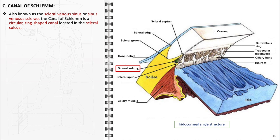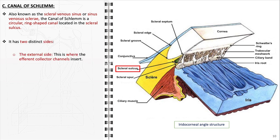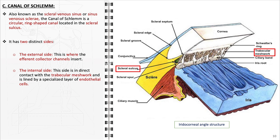The canal of Schlem's positioning is strategic for its function in ocular fluid dynamics. The canal has two distinct sides: on the external side, efferent collector channels insert into the canal, transporting aqueous humor from the canal of Schlem into the systemic venous circulation, which is essential in maintaining the balance of intraocular pressure. On the internal side, the canal is in direct contact with the trabecular meshwork and is lined with specialized endothelial cells that form a crucial interface, playing a dynamic role in regulating aqueous humor outflow and ensuring it enters the canal from the trabecular meshwork effectively.